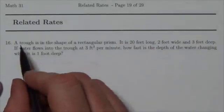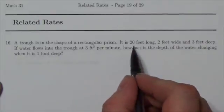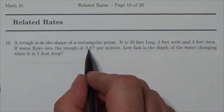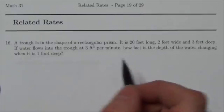Alright, this related rates problem asks: a trough is in the shape of a rectangular prism. It's 20 feet long, 2 feet wide, and 3 feet deep. Water flows into the trough at 3 feet cubed per minute. How fast is the depth of the water changing when it is 1 foot deep?